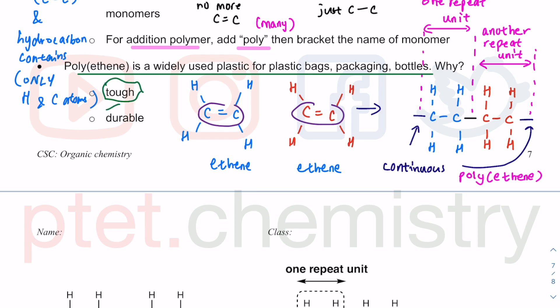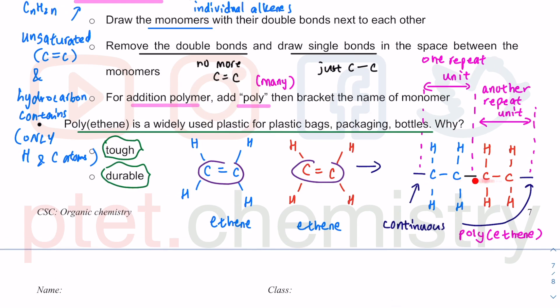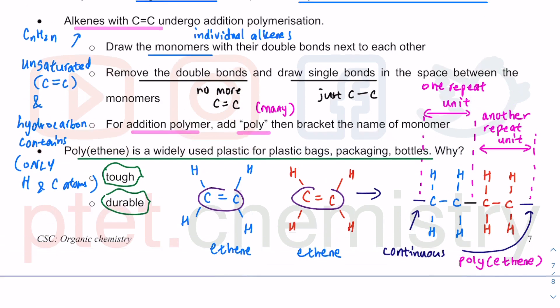Polyethene is widely used as a plastic bag, which is why it is very important in industry for packaging and also bottles. The reason is that polyethene is quite tough and durable. If you use plastic bags when you go to the market or buy food, those plastic bags are made of polyethene. It is made of these long chains of ethene having added together to give a long chain molecule. It is an addition polymer — tough, durable, used to make plastic bags and packaging.